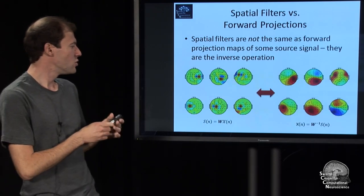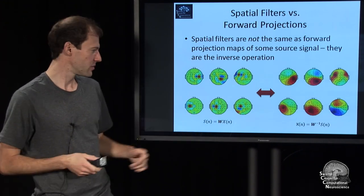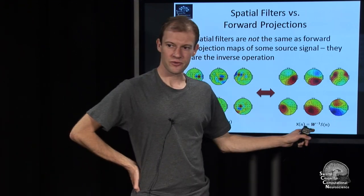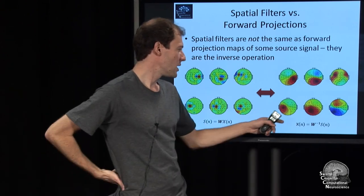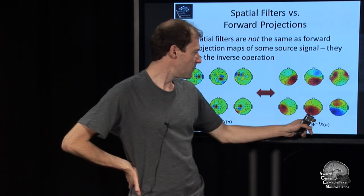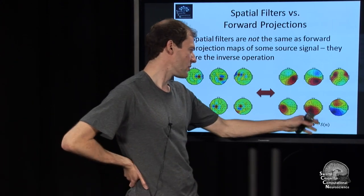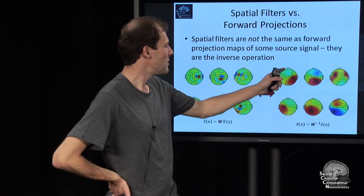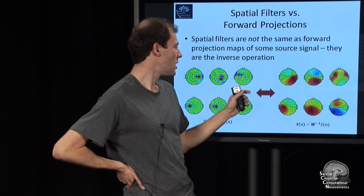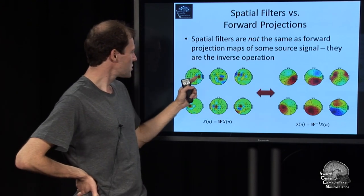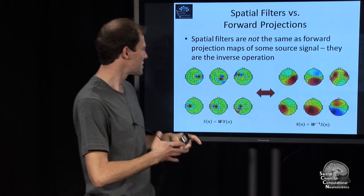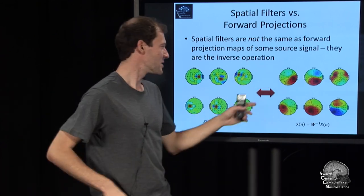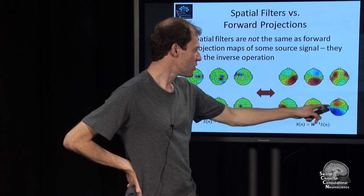So what we would be interested in, perhaps, is some interpretation of that. If you say these are some rows of a matrix W that you multiply by the sensor signal, you get some approximation of the source signal. You can calculate the inverse of that matrix if it's full rank, if it's invertible. If you now plot the individual projections, you basically get how each channel in S, it's now columns, maps onto the sensors.